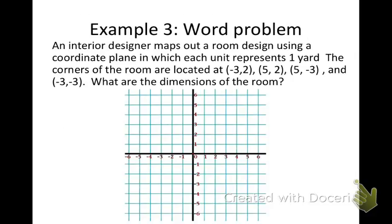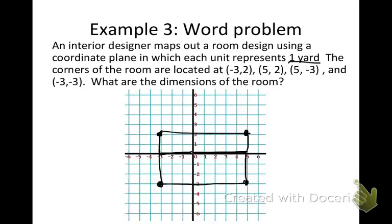Now we have a word problem. Copy this into your notebook, then listen. An interior designer maps out a room design using a coordinate plane in which each unit represents 1 yard. The corners of the room are located at four points. What are the dimensions of the room? First we plot the points: negative 3, positive 2; then positive 5, positive 2; then positive 5, negative 3; and negative 3, negative 3. If I connect all my dots, now I have a rectangular shape.